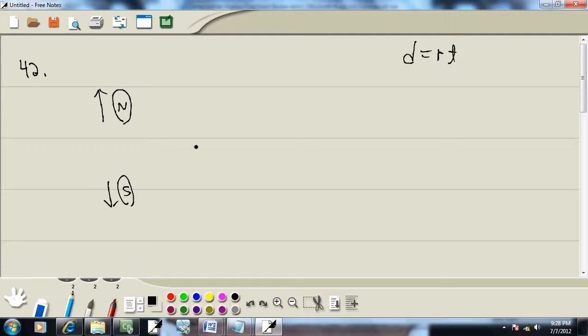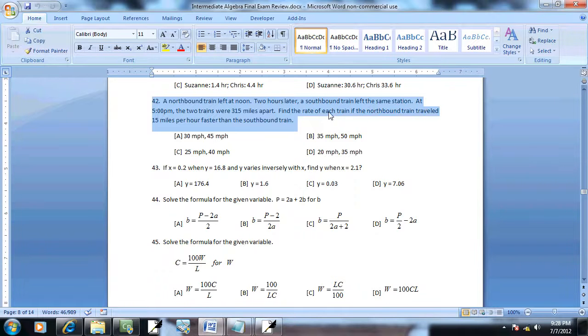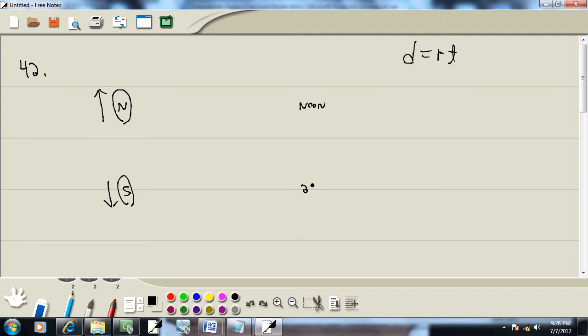Let's see. Northbound train left at noon, so they left at noon. Two hours later southbound train left the station, so they left at 2 o'clock.